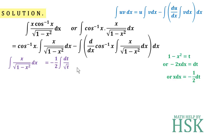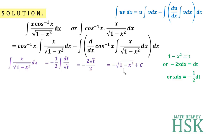The integration of 1 over √t with respect to t gives 2√t. Applying this, and keeping the minus sign, with the factor of 1/2 in the denominator, the 2 and 2 cancel out. Substituting back the value of t, I get minus square root of 1 minus x².